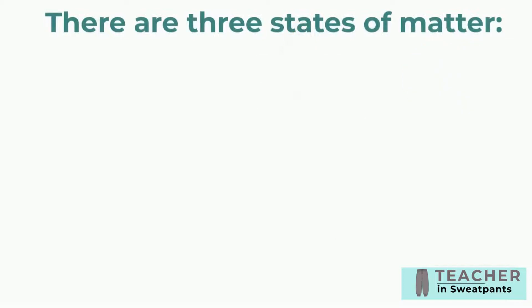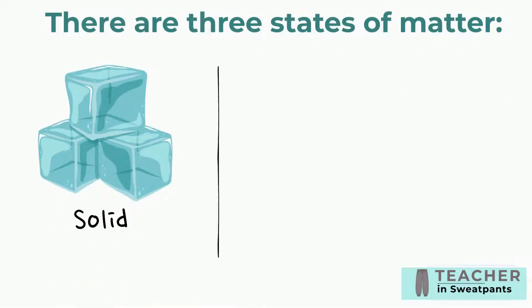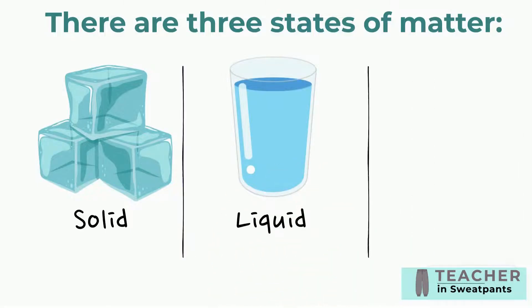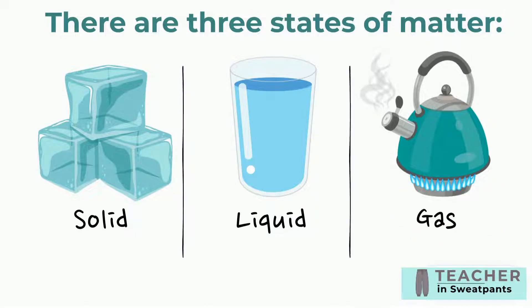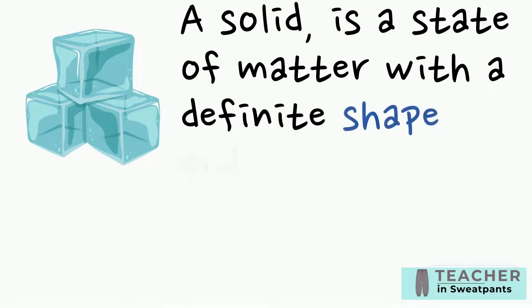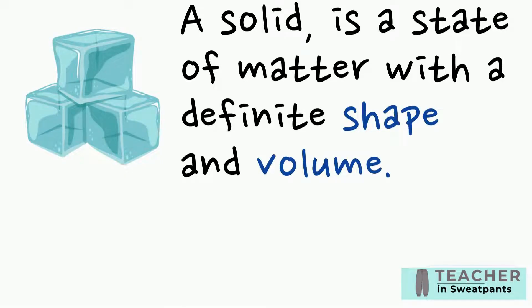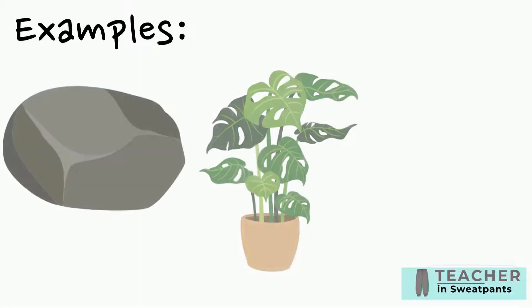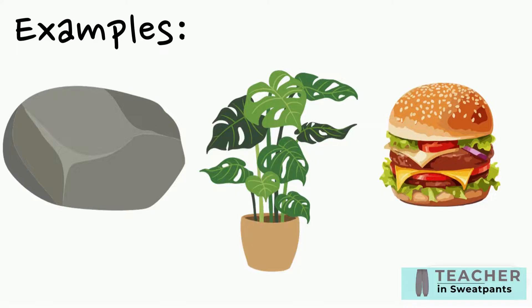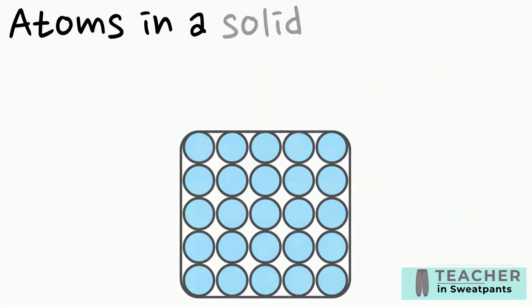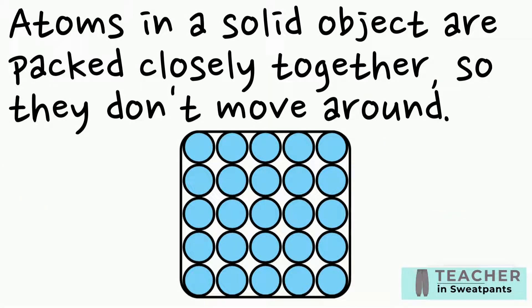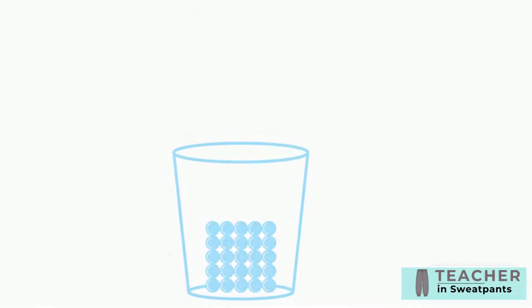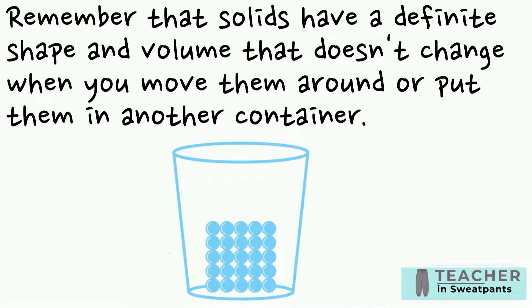There are three states of matter: solid, liquid, and gas. A solid is a state of matter with a definite shape and volume. Examples of a solid include a rock, a plant, and a hamburger. Atoms in a solid object are packed closely together so they don't move around. Solids have a definite shape and volume that doesn't change when you move them around or put them in another container.